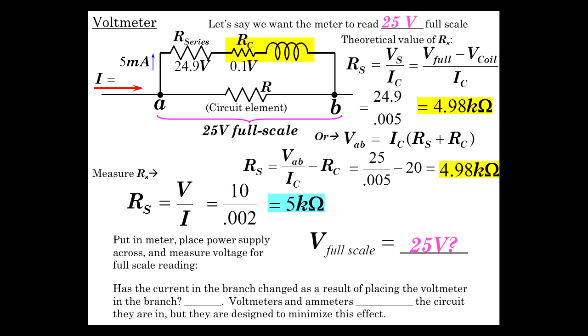Now has the current in the branch, this branch here, has it changed as a result of placing the voltmeter in the branch? Well yes it has, because here's the current coming in to this thing. Well you've just put a voltmeter across here. This whole thing above here is what you added and it's trickling off some of the current. It's trickling off 5 milliamps in this case, and so that changes the circuit a little bit.